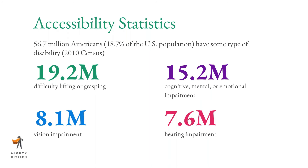15.2 million people have some form of cognitive, mental, or emotional impairment, which plays a big role in making your website usable — for example, difficulty understanding complex navigation or forms. 8.1 million people have some form of vision impairment. These users may be completely blind and rely on a screen reader, use a screen magnifier, or have some form of color blindness.